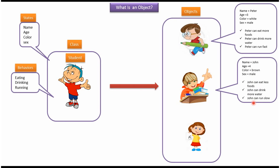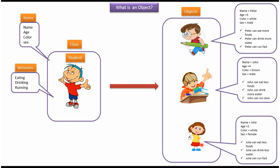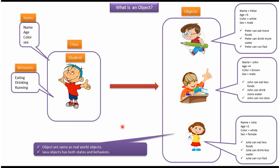John can eat less foods, John can drink more water, and John can run slow. This is the third student object: name is Julia, age is two, color is white, sex is female. Julia can eat less foods, Julia can drink less water, and Julia can run fast. Objects are the same as real world objects, and Java objects have both states and behaviors.